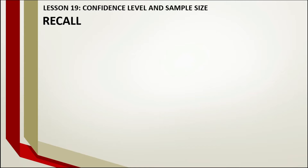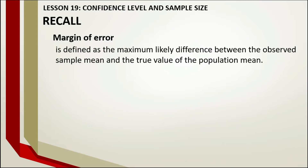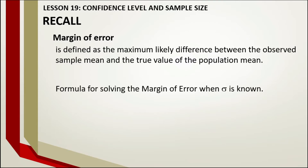Let us recall our previous lesson. What is margin of error? Margin of error is defined as the maximum likely difference between the observed sample mean and the true value of the population mean. The formula for solving the margin of error when the population standard deviation is known: E is equal to the confidence coefficient multiplied by the population standard deviation divided by the square root of the total number of samples.